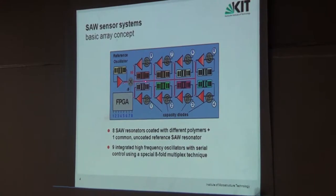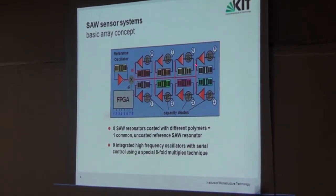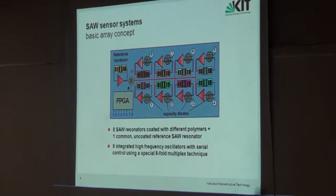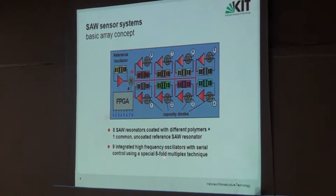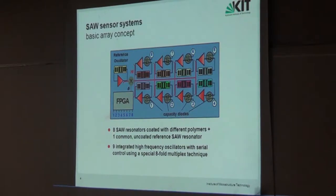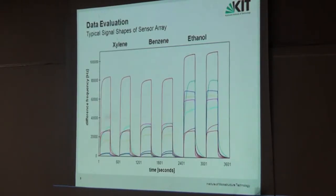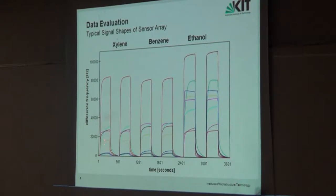We interrogate one sensor after the other — not all in parallel simultaneously. Only one is running at a moment, and its signal is subtracted from the continuously running reference oscillator. This is called a multiplex technique for interrogation of the whole array. As end users, for a given chemical, you see an eight-fold signal output from eight different sensors, differing due to the different polymers used on each.